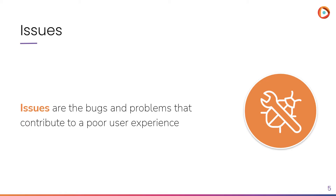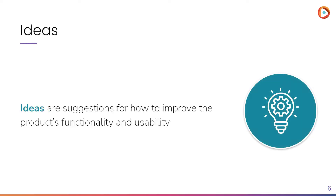Issues are the bugs and problems that contribute to a poor user experience. If a feature doesn't work the way it's supposed to, you should report it as an issue. Ideas are suggestions for how to improve the product's functionality and usability. If you have a feature you'd like to see added or a suggestion that would make the product easier to use, submit them as ideas.